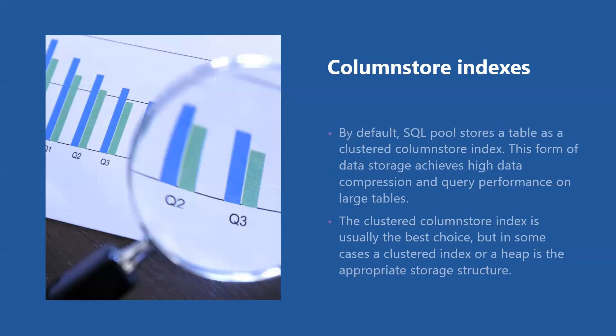What are column store indexes? By default, SQL pool stores a table as a clustered column store index. This form of data storage achieves high data compression and query performance on large tables. The clustered column store index is usually the best choice, but in some cases a clustered index or a heap is the appropriate storage structure. We will cover all these indexes in more detail in the next module.